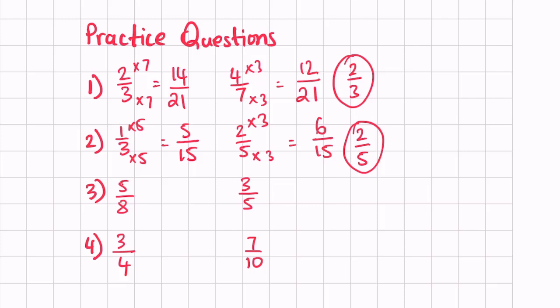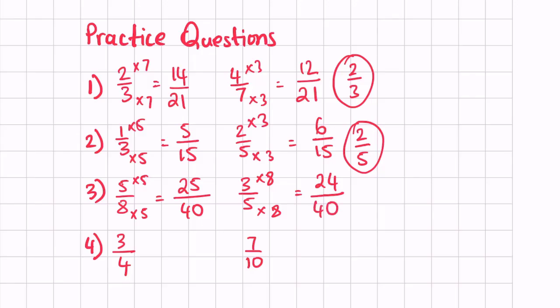Over here we have 8 and 5 as the denominators. We multiply by 5 — numerator and denominator — giving us 25 over 40, and the other fraction by 8, giving us 24 over 40. We can see 25 over 40 is larger than 24 over 40, so our larger fraction is 5 eighths.